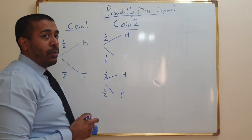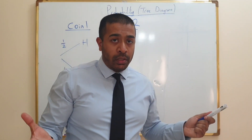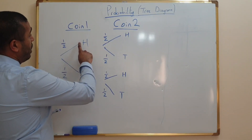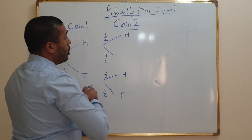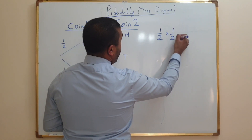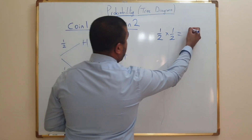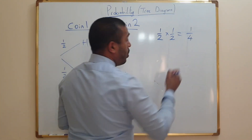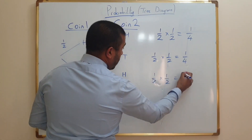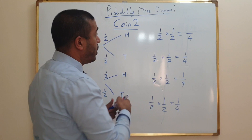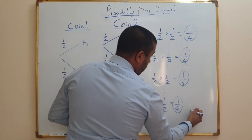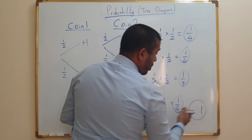What's the point of doing all of this? Well, if you want to work out the probability of the first coin being heads and the second coin being heads, you multiply the two outcomes together: one half times one half gives you one quarter. If you do that for all of the probabilities, all of the outcomes added together give you one quarter plus one quarter plus one quarter plus one quarter, which equals one whole.